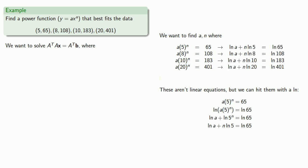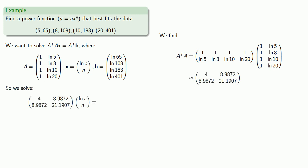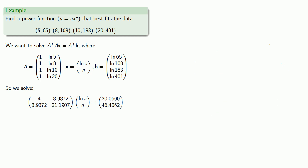And notice that our unknowns are now log of A and N. So we can write our coefficient matrix A, our column vector of variables X, our matrix of constant values. So we need to find A transpose A, A transpose B. Row reducing our augmented coefficient matrix gives us the solution.